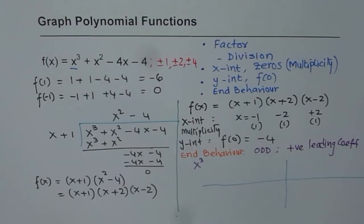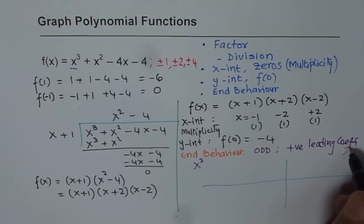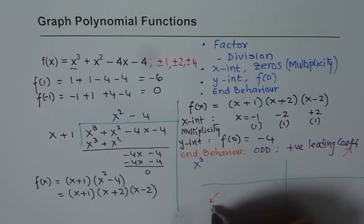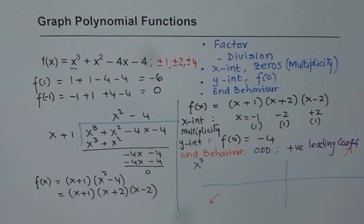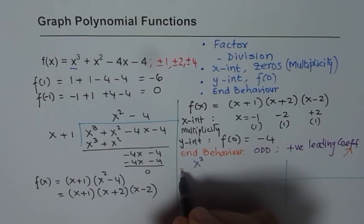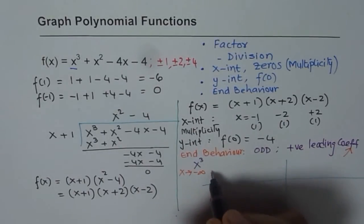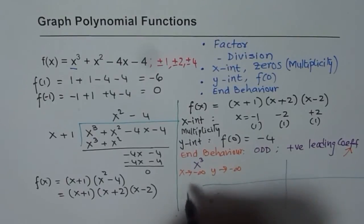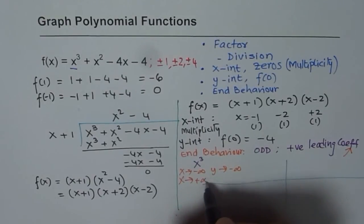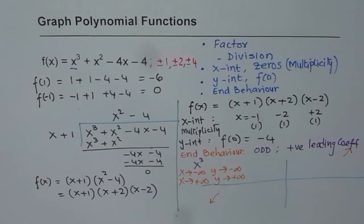When we say that it's odd and positive, positive means right side up. So the function has to go right side up. Odd means it has to start from quadrant 3. So that is the end behavior. As x approaches negative infinity, y approaches negative infinity. And as x approaches positive infinity, y approaches positive infinity. That is the end behavior for this function.